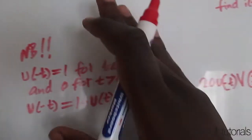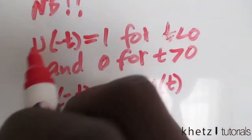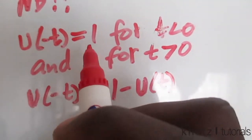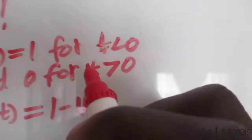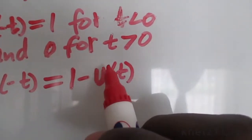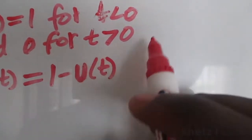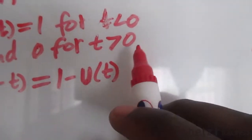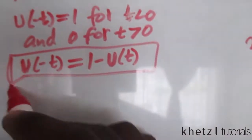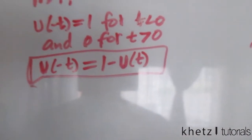Before we start, let me give a recap. u(-t) has a value of 1 for time less than zero, and it is zero for time greater than zero. We are only going to use the top part of that definition, and it's going to come in handy as you're going to see.